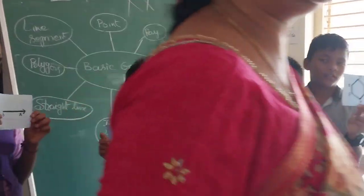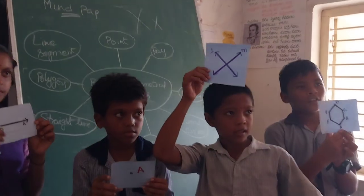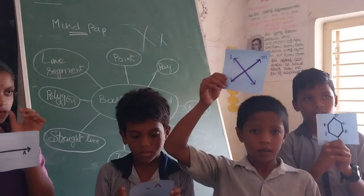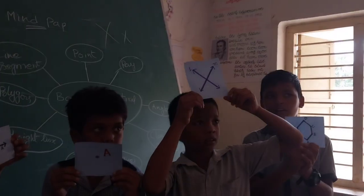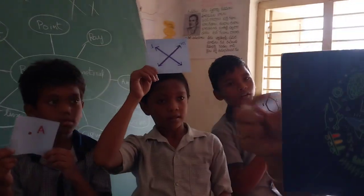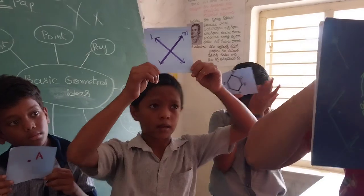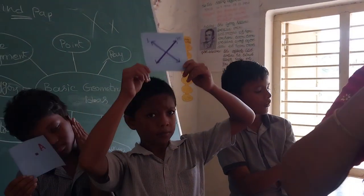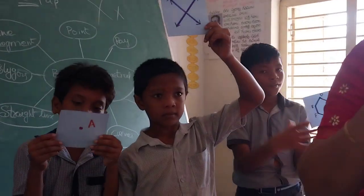Another example for intersecting lines versus parallel lines: the opposite sides and edges of a book are parallel lines — they do not meet at one point. These two side edges are also parallel lines.